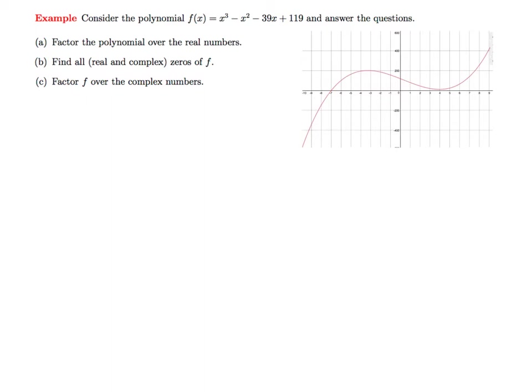Looking at this graph, we can see that there seems to be one zero at x equals minus 7 over here, and there doesn't seem to be any other zeros.